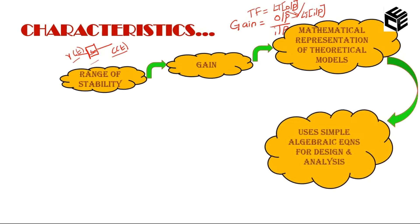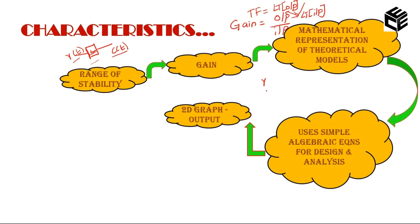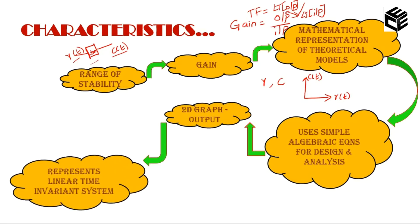Transfer function gives a 2D graph output — taking R as input and C as output, we draw a graph showing this 2D structure. The final characteristic is that transfer function is used to represent the linear time invariant system, also called an LTI system.